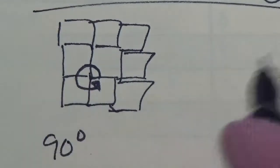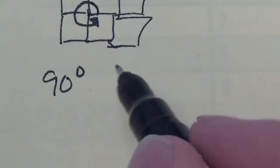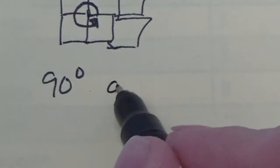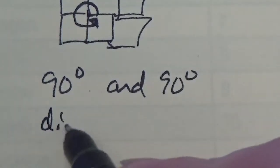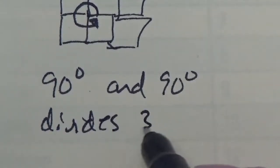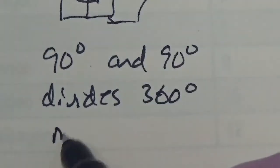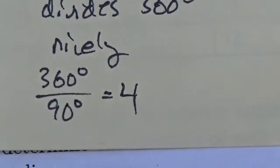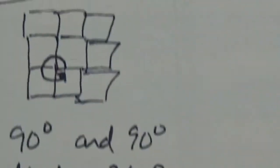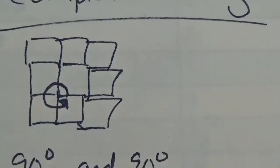That's because the corner of a square is 90 degrees, and 90 divides 360 degrees nicely. If you take 360 degrees and divide that by 90 degrees, you get four — which is how many squares you need to go around that point.